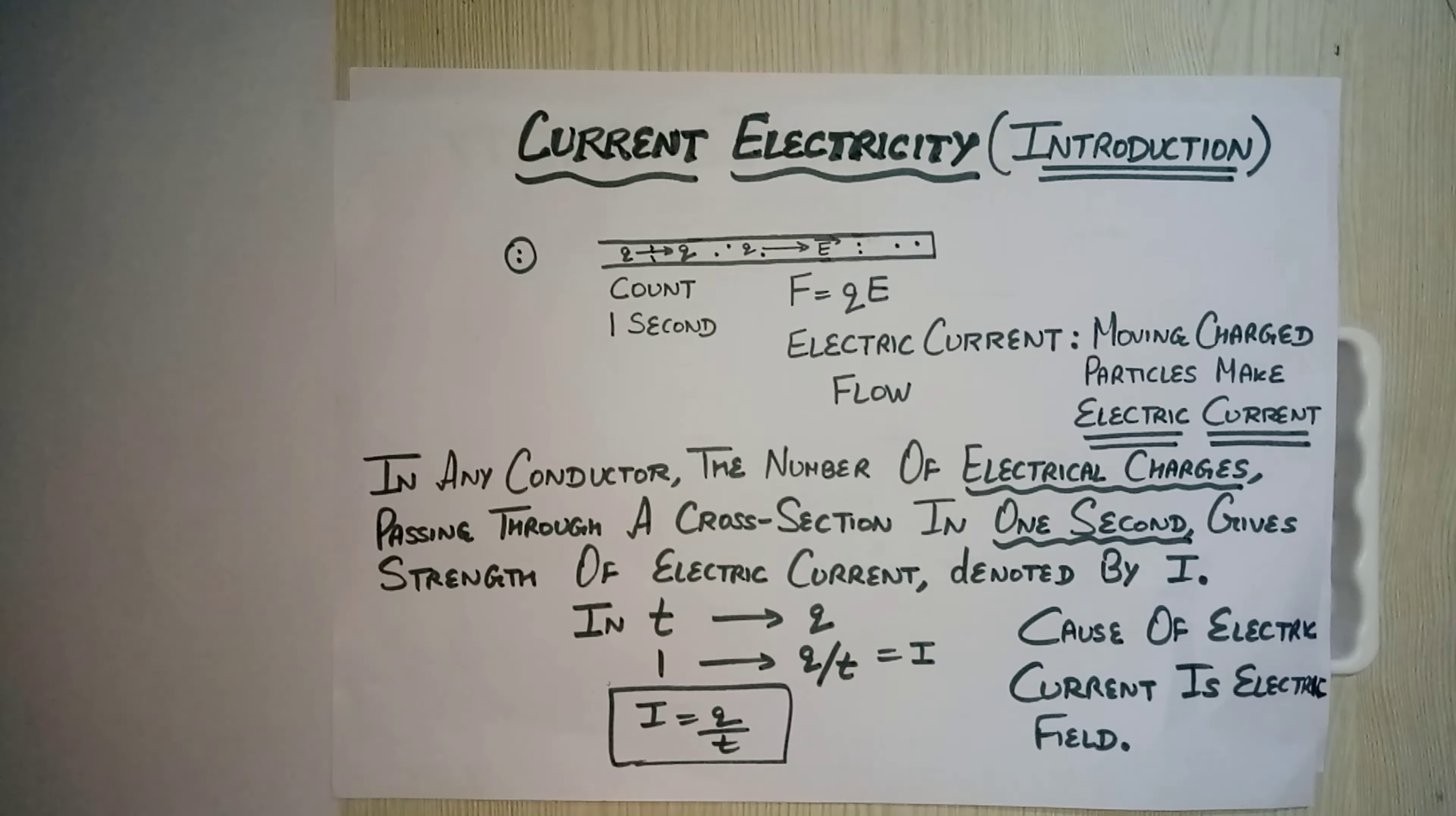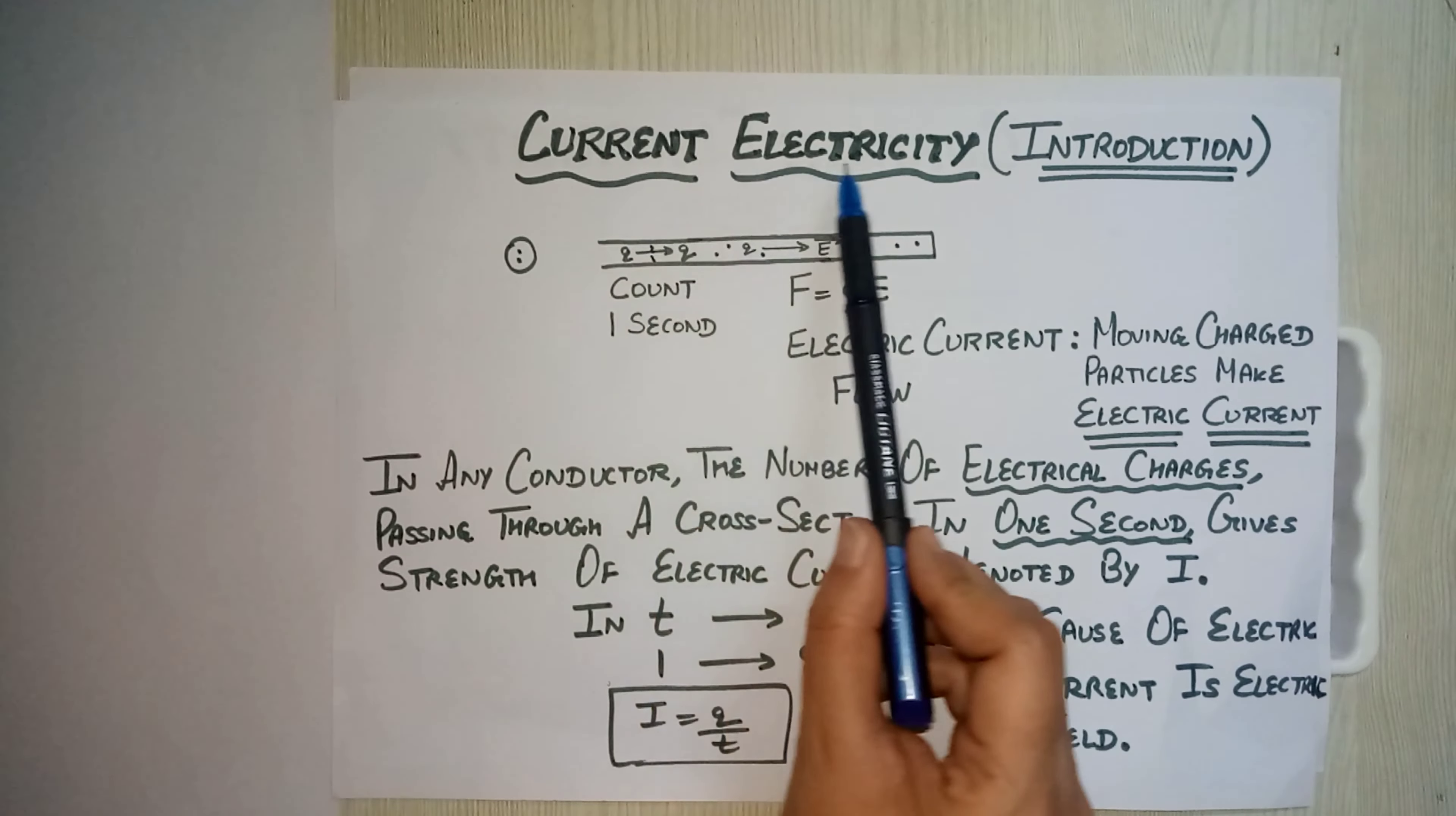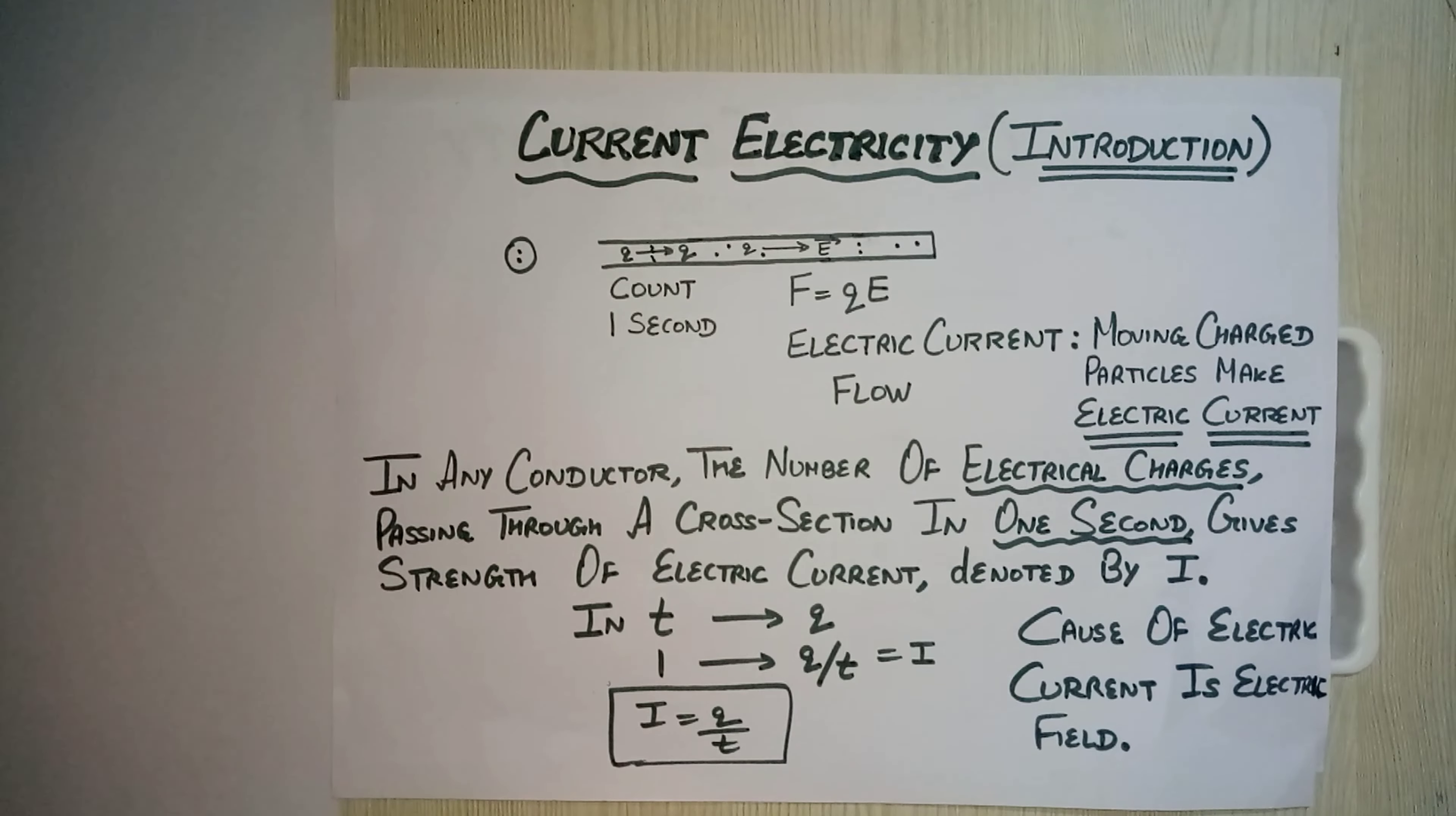Today we are starting a new chapter: current electricity. If there is an electric field and there is a charge in that electric field, it will experience a force. If we don't cancel out that force with any other force, then what will happen? The net force always creates an acceleration and net force is responsible for motion of that particle, so that particle starts moving.